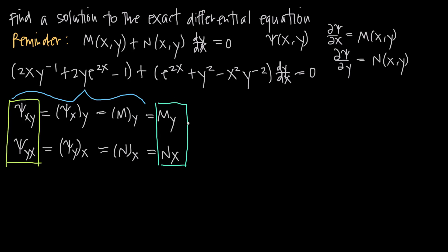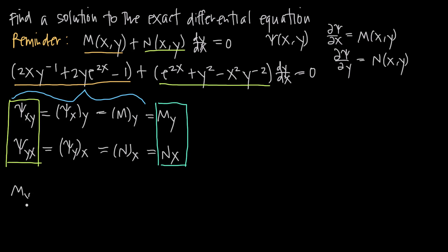If ∂M/∂y and ∂N/∂x are not equal to one another, then you can say immediately that this is not an exact differential equation and you shouldn't bother finding psi. So if we look at the differential equation we've been given, we should be able to identify M(x,y) as this first function and N(x,y) as this second function, and now we just need to take our partial derivatives.